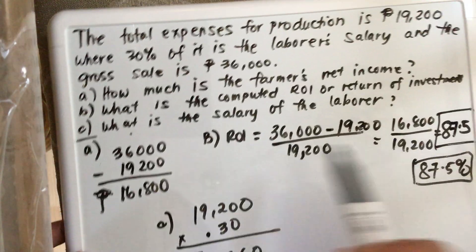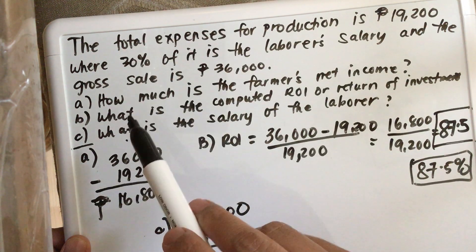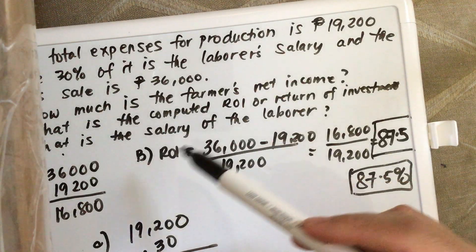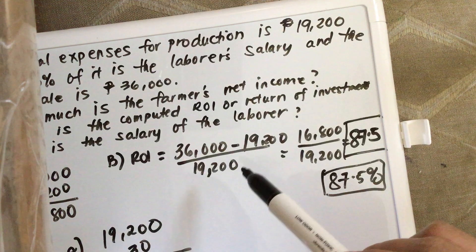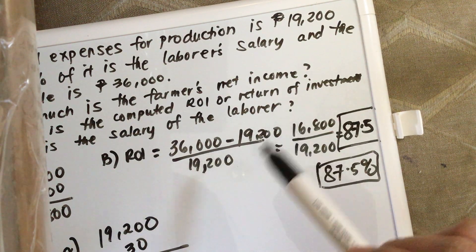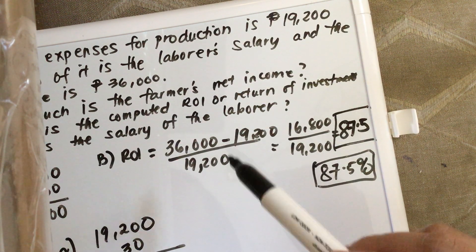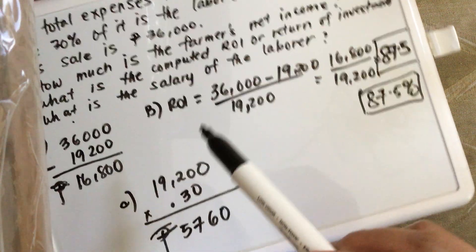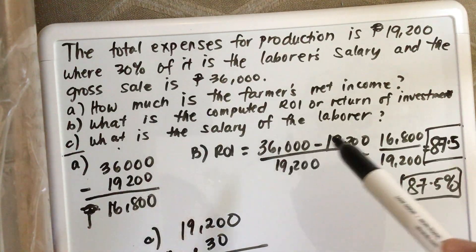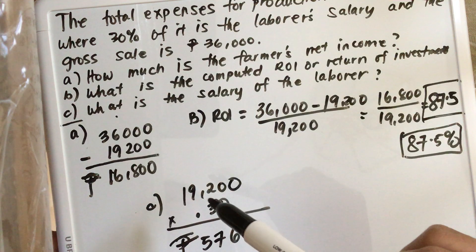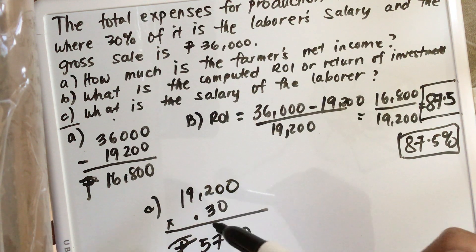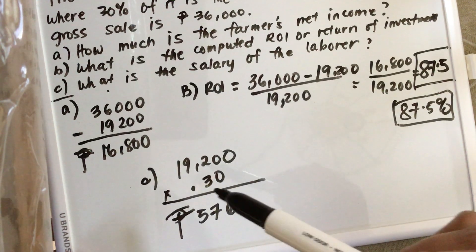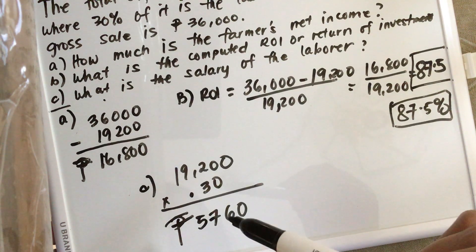So to summarize: A — the farmer's net income is 16,800 pesos. B — the ROI, or return on investment, is 87.5%. C — the salary of the laborer is 30% of total expenses, so 19,200 times 0.30 equals 5,760 pesos.